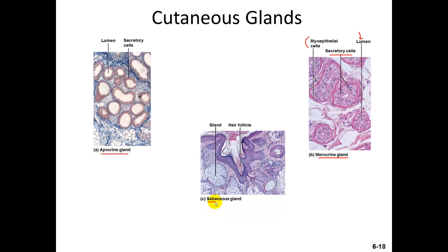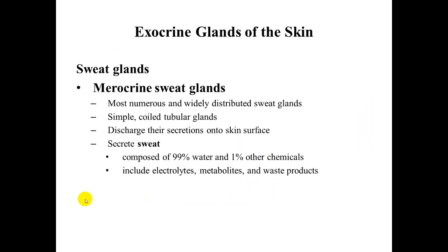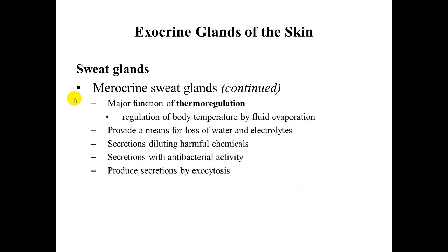We will also look at the sebaceous gland, which you can see associated with the hair follicle in the figure. The merocrine sweat glands are the most numerous, found everywhere over the body, discharging sweat onto the skin surface. Sweat is composed mainly of water plus a small amount of other chemicals, including electrolytes, metabolites, and waste products. Sweat glands function mainly in thermoregulation — controlling body temperature through fluid evaporation.